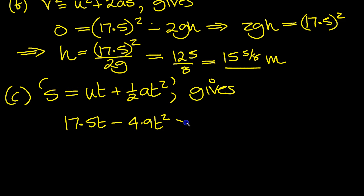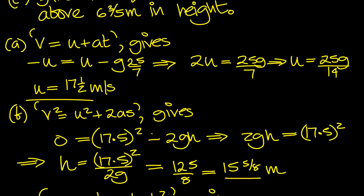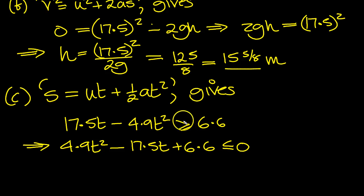Now this is the height. When is the height bigger than or equal to 6 and 3 fifths? This was 6.6. So let's just move this over to be plus 4.9t squared minus 17.5t plus the 6.6 is less than or equal to zero.